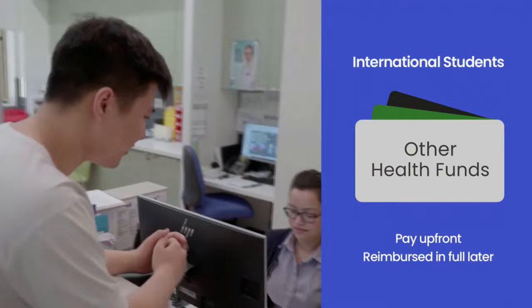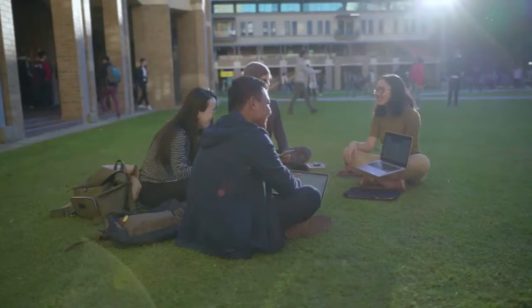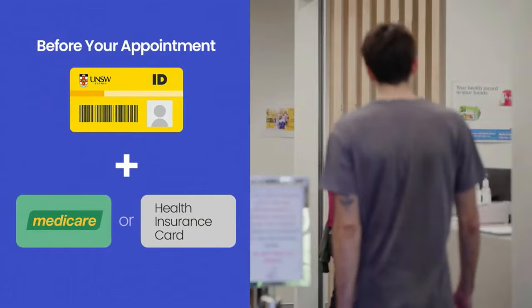If you are an international student with other health insurance funds, you may need to pay upfront and be reimbursed later by your health insurer. On the day of your appointment, you can find us on the ground floor of the Quadrangle at the Kensington Campus — please check in with reception and present your UNSW ID card and a Medicare or health insurance card. As an international student, the GP-centred model of care here in Australia might be something you're not used to back home, but the doctors are really actively involved in your personal health and wellbeing, even going the extra mile to call after hours to check in.